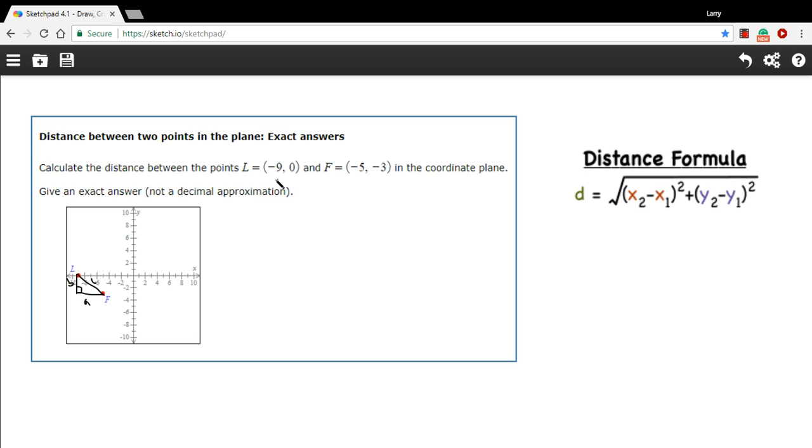Let me show you how this works in this particular problem. In the formula, inside these parentheses, it says X2 minus X1. You can think of X2 as this one. That's the X coordinate of the second point. And X1 is this one. So we'll take X2 minus X1.